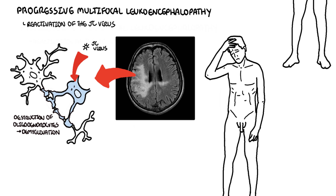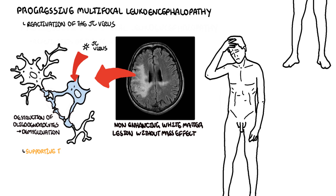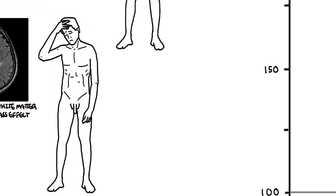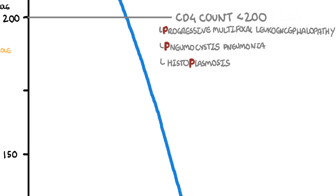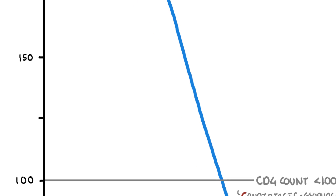The JC virus infects oligodendrocytes and causes demyelination. People often present with focal neurological deficits, altered mental status, and just feeling unwell. MRI findings show disseminated, non-enhancing white matter lesions without any mass effect. Unfortunately, there is no treatment for this condition, and so it is all supportive care. Those are two examples of AIDS-defining conditions with a CD4 cell count less than 200.